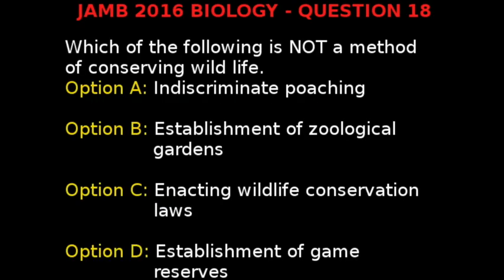JAM 2016 Biology question 18. Which of the following is not a method of conserving wildlife? Option A, indiscriminate poaching.